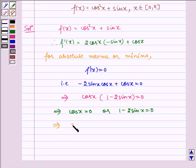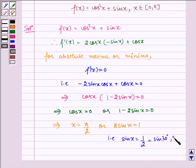Which implies x equals π/2 or 2sin x equals 1. That is sin x equals 1/2 which equals sin 30° or sin 150°.